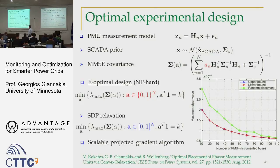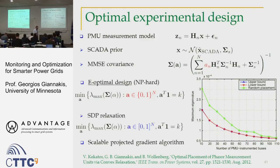We show the maximum eigenvalue as a function of the number of instrumented buses, with an upper bound and a lower bound. If you randomly place 5 or 20 PMUs, the error can be 2–3 times higher than the optimized placement. This shows that careful selection of where to place the limited number of PMUs, using optimization tools such as semi-definite relaxation, yields substantial improvement.